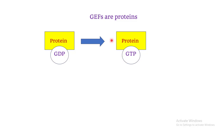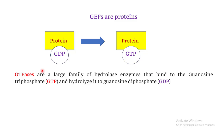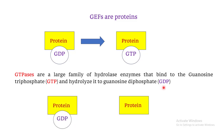The substrate proteins for the GEFs are known as the GTPases. GTPases are a large family of hydrolase enzymes that bind to GTP and hydrolyze it to guanosine diphosphate, or GDP. GTPases can bind to either GDP or GTP, but these bindings have different meanings.